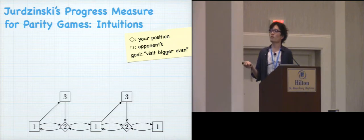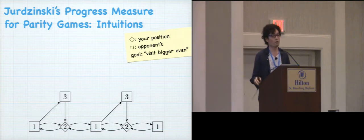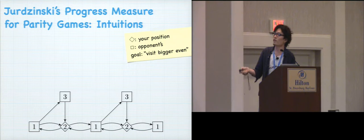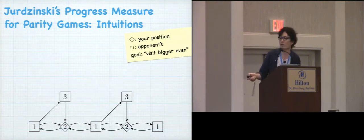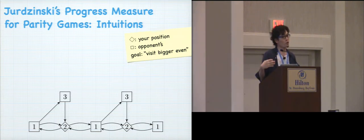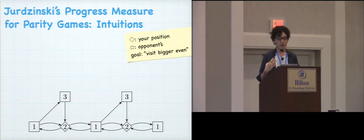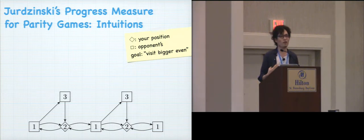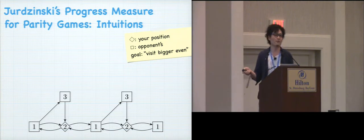So let's look at parity games and Jurdzinski's notion of progress measure, which is the core ingredient of this algorithm. Here's a parity game. And the diamond states, they are your positions. And the box states, they are the opponent's positions. So your goal is the parity acceptance condition. And let me spell it out. It's the greatest priority that you visit infinitely often is even. Right? Which I just succinctly put, visit bigger even. And then my question is, who is winning in this parity game?